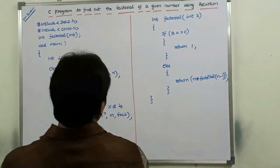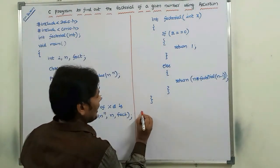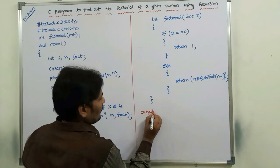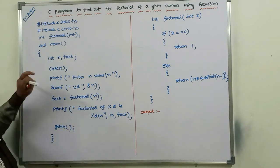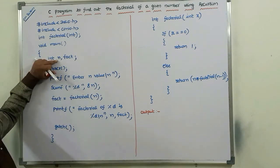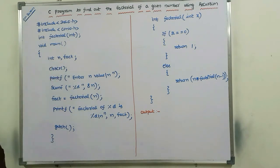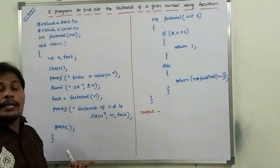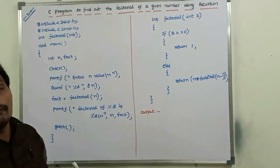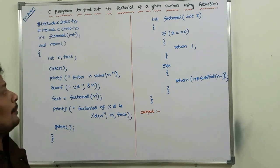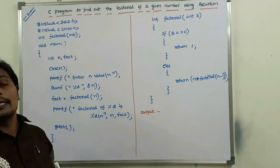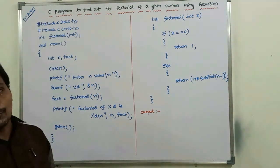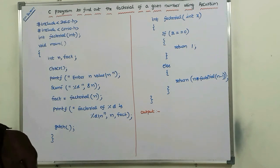Here, what is the output we are getting? Now, n is nothing but the value for which we have to find out the factorial. We are entering whatever n value, and for that we have to find out the factorial. fact is a variable; this variable is used for storing the factorial value of a given number n.